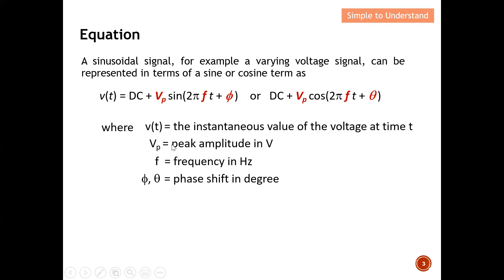V-peak is actually the peak amplitude in voltage. The F here stands for frequency in hertz, while beta is the phase shift in degrees, or sometimes in radians. You can see how the signal changes according to time — at different time intervals, we can have different amplitude. Most of the time, the frequency remains intact and we can also have some phase difference. So with this equation, we can see how the voltage changes according to time.